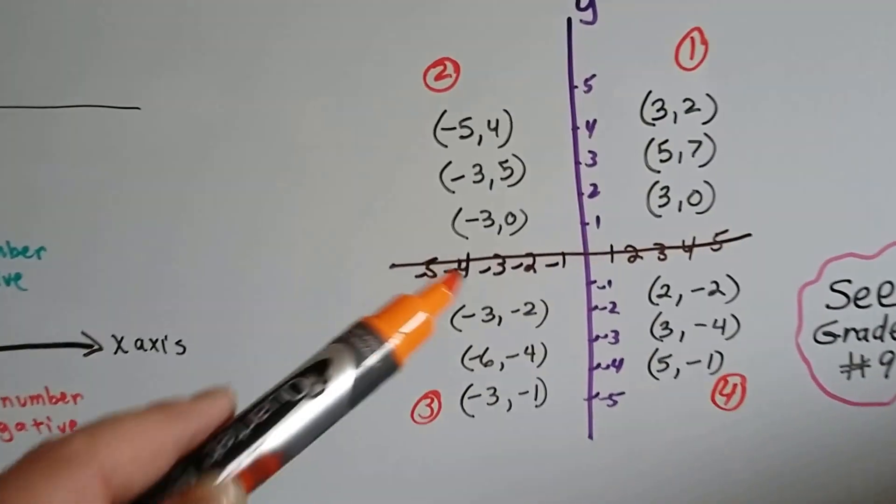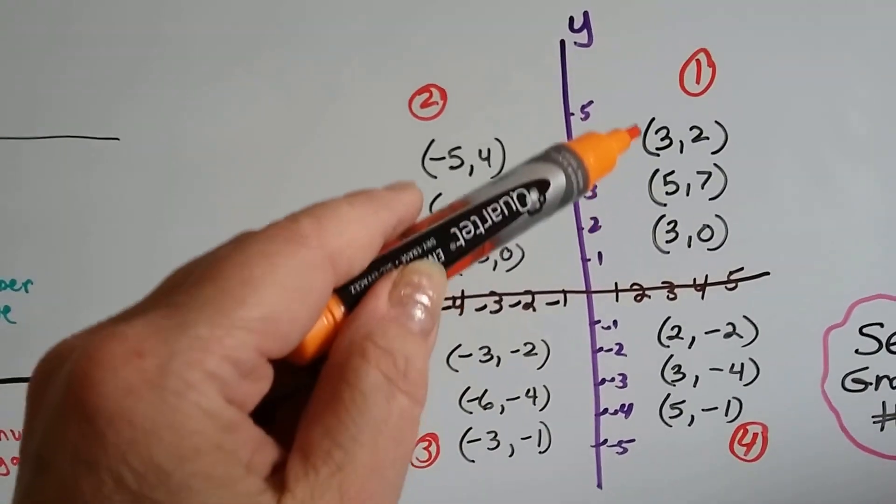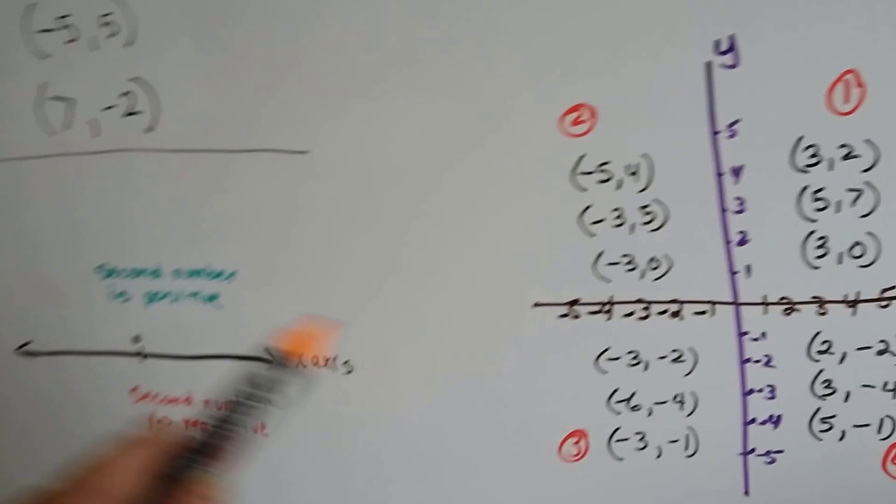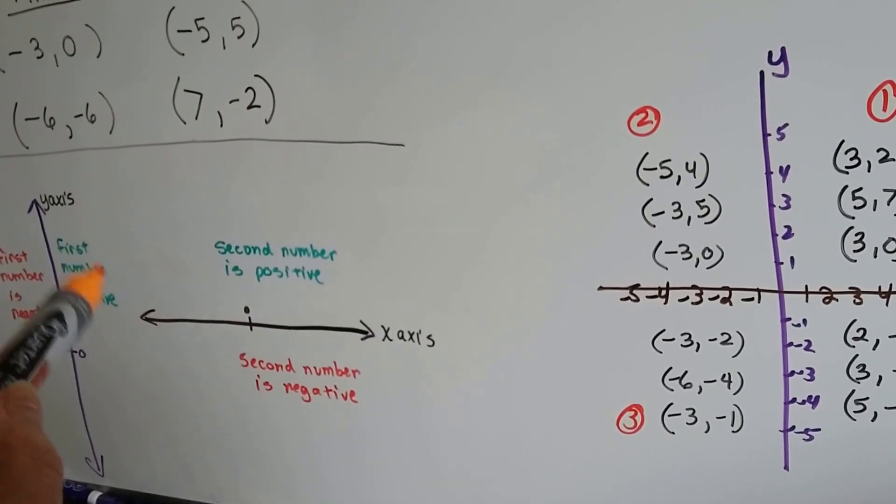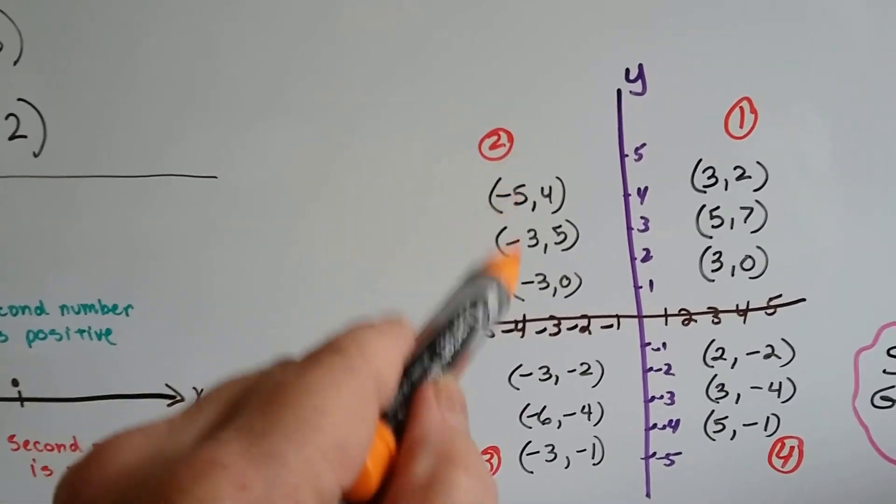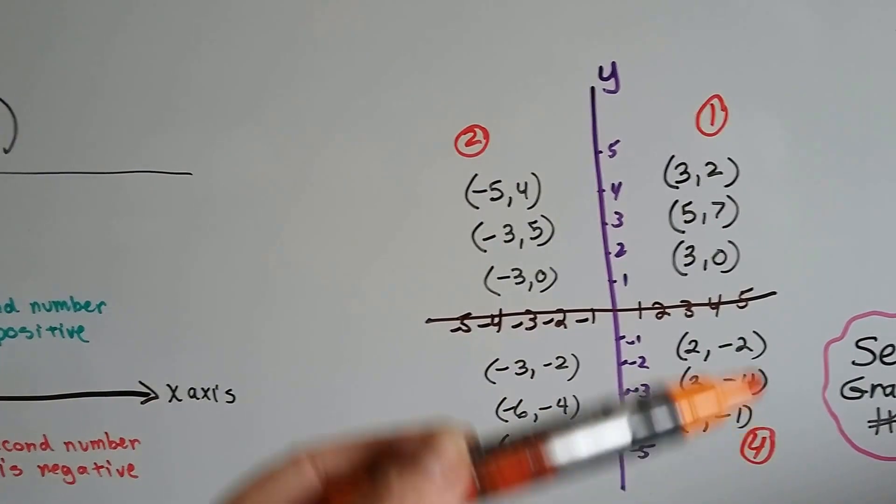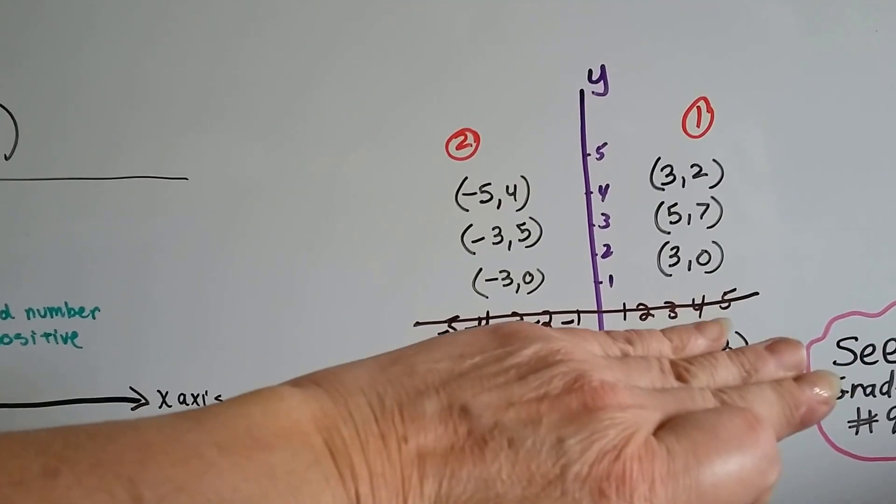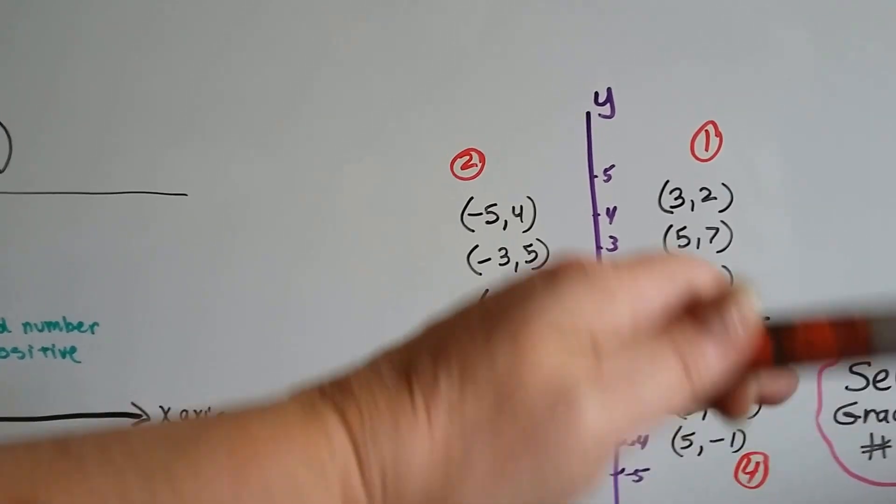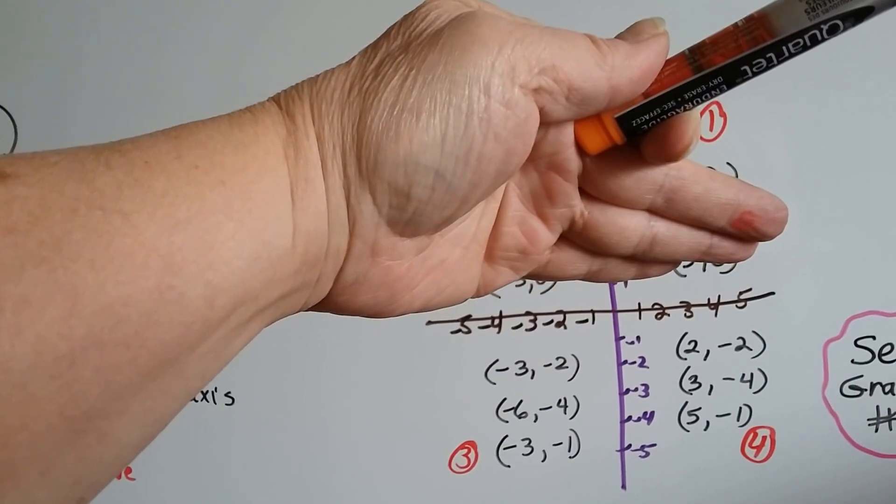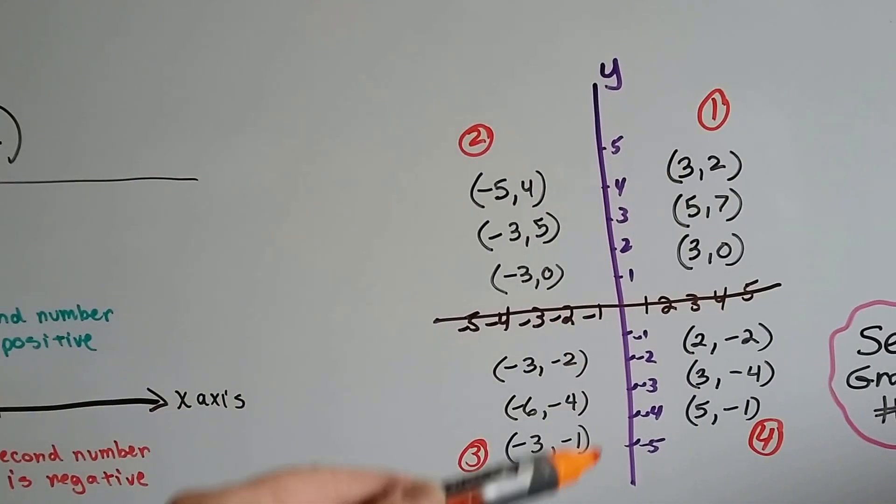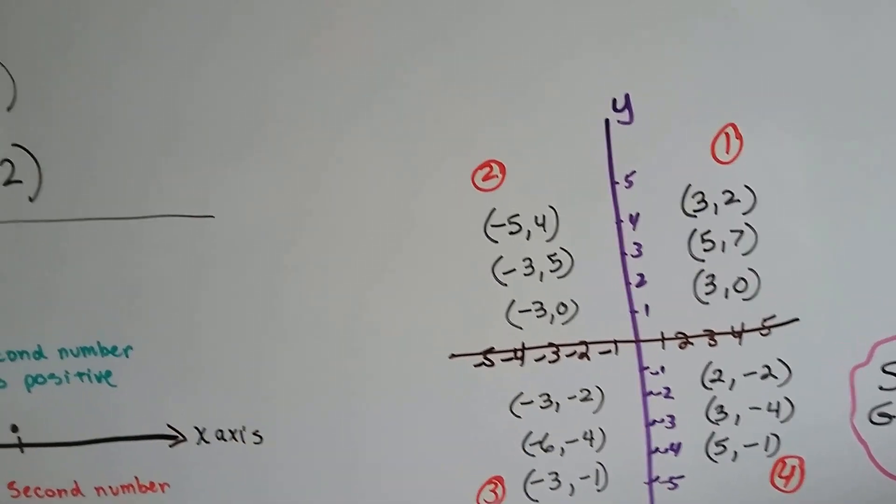We can see here that the first number is positive because it's in the first quadrant. When the first number is positive, it's on that side of the y-axis. When the first number is negative, it's on this side of the y-line. When the second number is positive, it's on the top of the x-line. See all those positive second numbers? The positive y's. And then when the second number is negative, when the y-coordinate is negative, it's on the bottom of the x-line because it's down here in the negative part of the y.